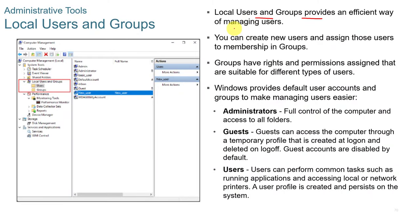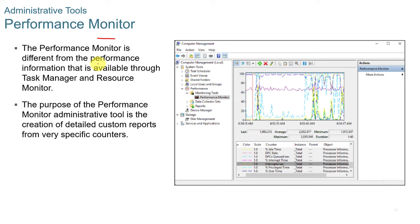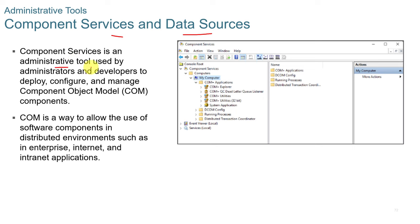Local Users and Groups provides an efficient way to manage users — you can create new users and groups. Groups include Administrators (full control), Guests (temporary profile access), and standard Users. The Performance Monitor, unlike the Task Manager performance view, is designed to create detailed custom reports from specified counters. Component Services and Data Sources is an administrative tool used by administrators and developers to deploy, configure, and manage COM (Component Object Model) components, which allow software components to be used in distributed environments such as enterprise, internet, or intranet applications.